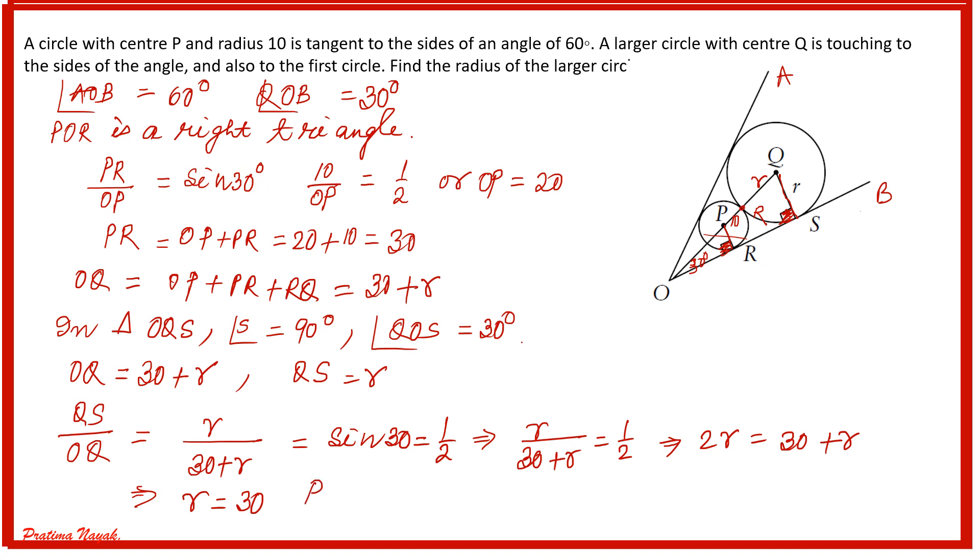So the radius of the larger circle is 30 units. And there is also another method. We can use similarity theorem to find this as well.